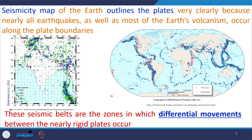The seismic map of the Earth outlines plates very clearly because nearly all earthquakes and most volcanism occur along plate boundaries. In the Indian scenario, earthquakes and volcanoes are distributed along the plate boundary. Globally, the distribution of earthquakes and volcanoes represents plate boundaries. The East African Rift Valley represents a plate boundary between the African plate and the Somali plate. Earthquake distribution and volcanic distribution define the plate boundary positions on the Earth's surface.